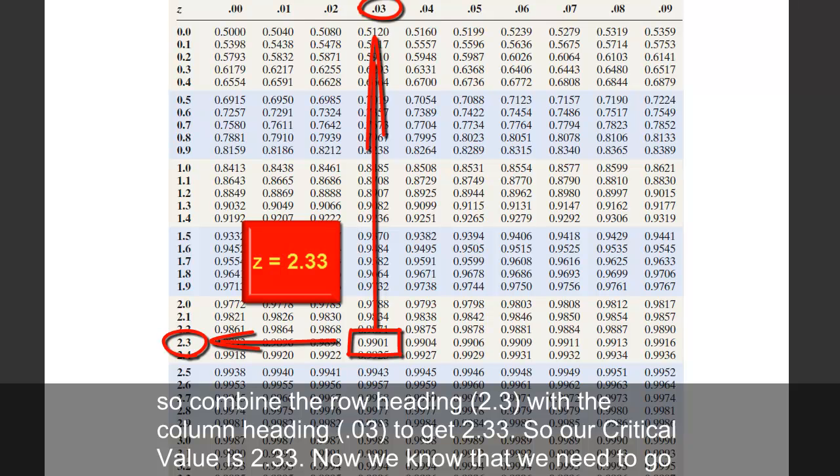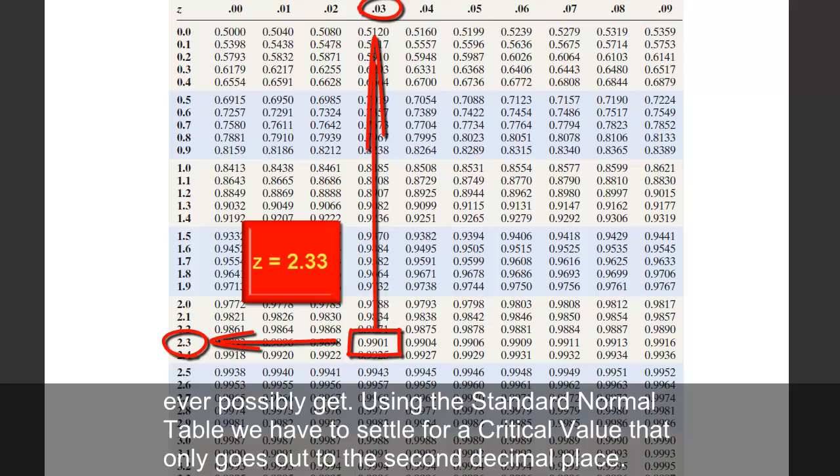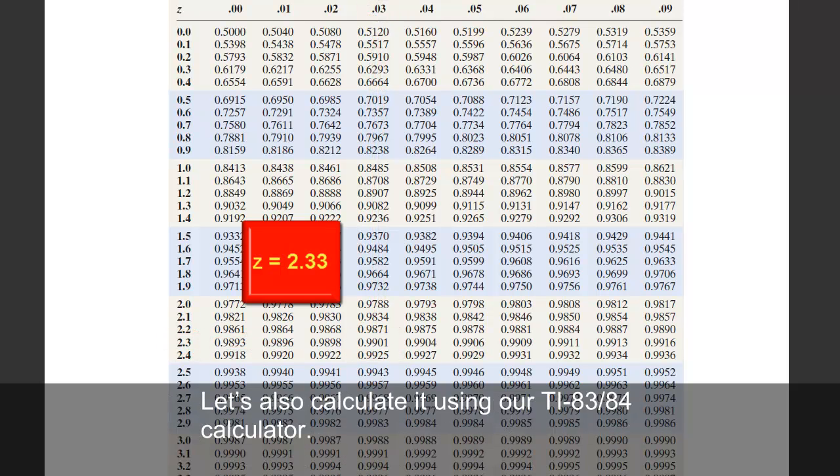So our critical value is 2.33. Now we know that we need to go 2.33 standard errors above and below the population mean in order to contain the middle 98% of all the possible sample means we could ever possibly get. Using the standard normal table, we have to settle for a critical value that only goes out to the second decimal place. Let's also calculate it using our TI-83/84 calculator.